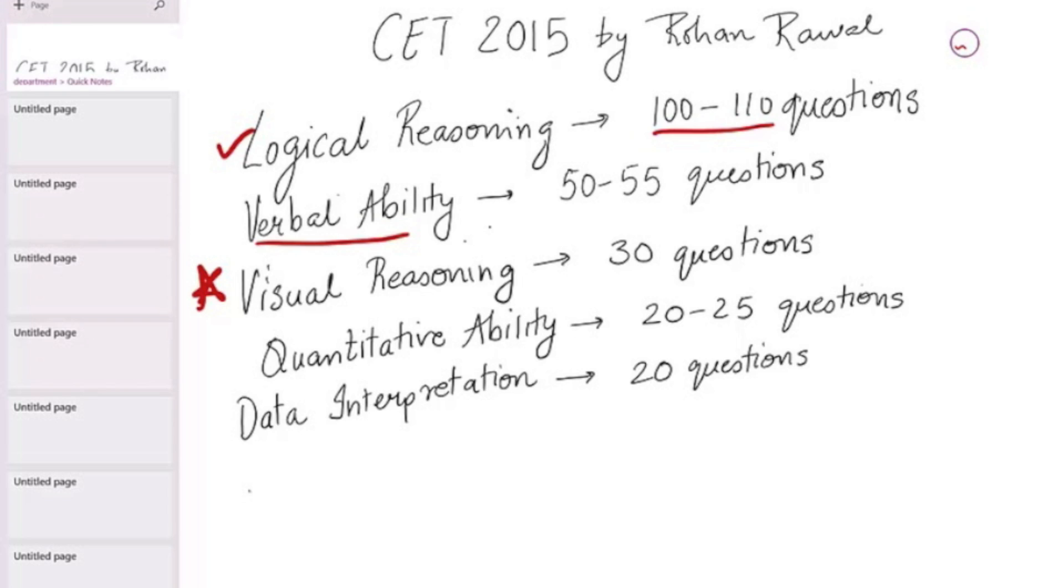Then we have quantitative ability, which is just 20, 25 questions. So my folks out there who are really scared of quant, here's a good news for you. Here's the exam that you need to focus on. Quantitative ability is just 10%. And finally, we have data interpretation, which just has 20 questions in it again, 10% of the entire paper.